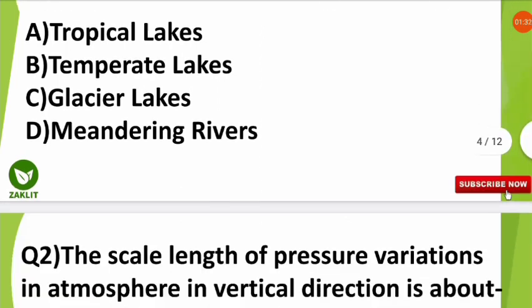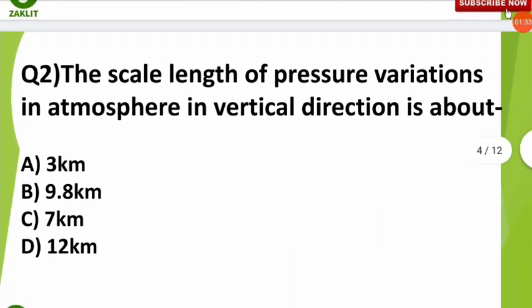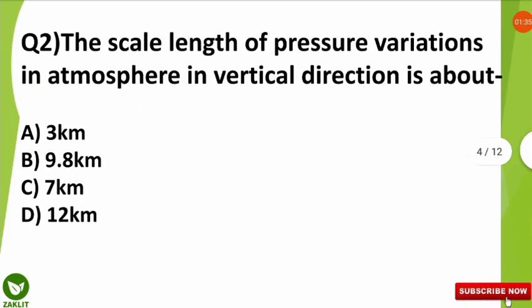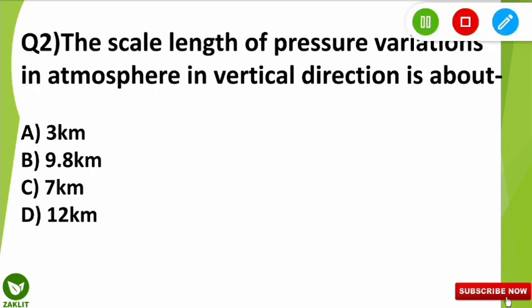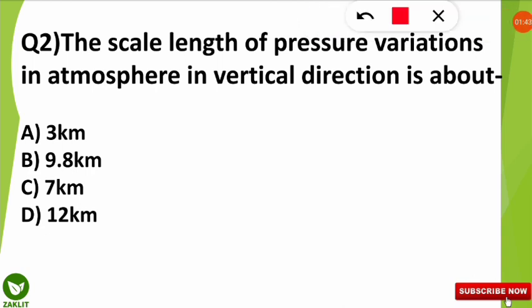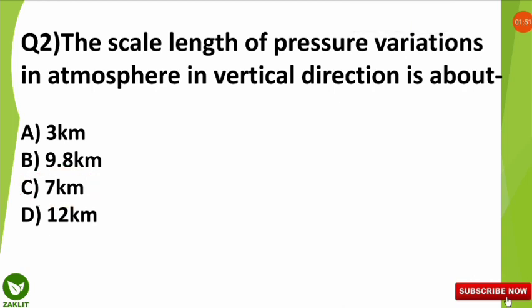Let's move to the second question. The second question was: the scale length of the pressure variations in the atmosphere in the vertical direction is about how many kilometers? The correct option is that the scale length for the pressure variation in our atmosphere is 7 kilometers, which is very prominent.